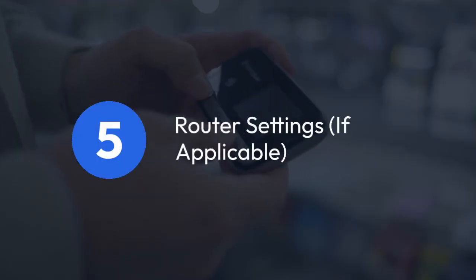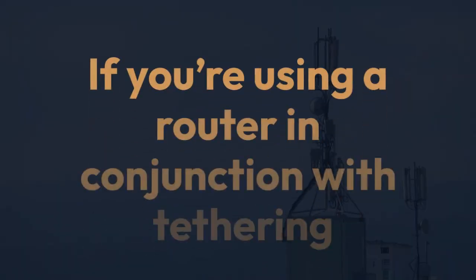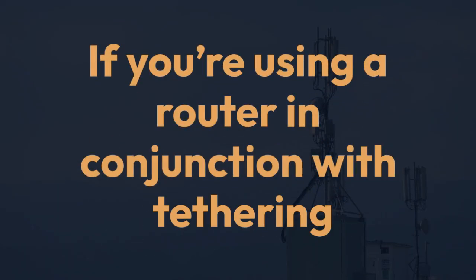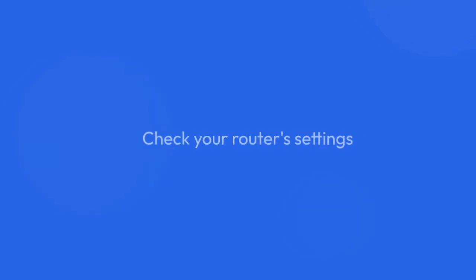5. Router settings, if applicable. If you're using a router in conjunction with tethering — for example, sharing the tethered connection with other devices — check your router's settings. Make sure quality of service (QoS) isn't throttling your tethering connection and that the router's firmware is up to date. Also, look for options to optimize bandwidth usage.